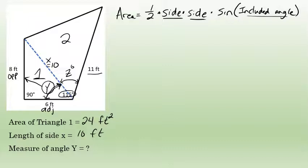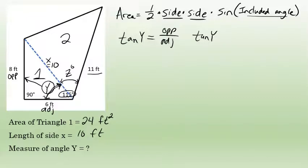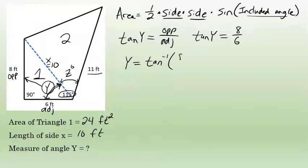Adjacent to angle y is the side given as 6 feet. The tangent of any acute angle in a right triangle is equal to the length of its opposite side over the length of its adjacent side. So the tangent of angle y equals 8 over 6. I can use an inverse trig function to find the measure of angle y — the inverse tangent of 8 over 6. Rounding to the nearest tenth, that is approximately 53.1 degrees.